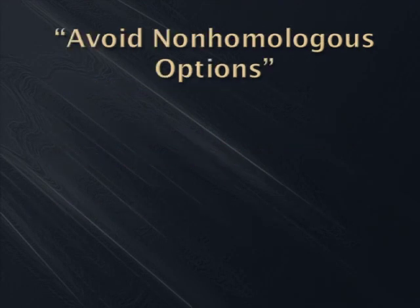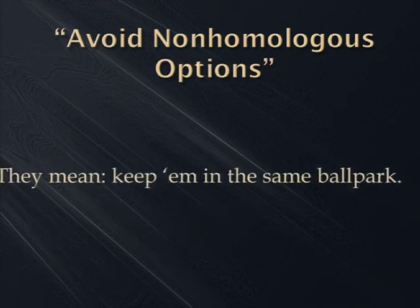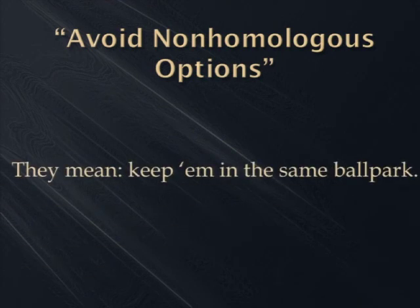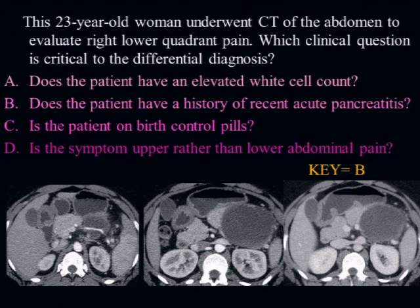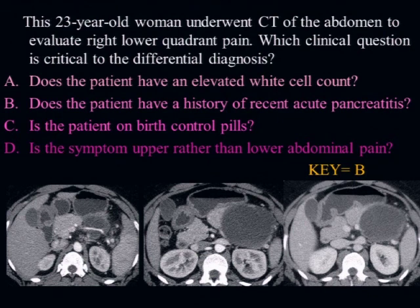You've got to keep choices focused. The board says avoid non-homologous options — just keep them in the same ballpark, the same sorts of things — because you want to test a single concept. Here's an example from the pancreatitis cases: A: does the patient have an elevated white count? (lab finding). B: does the patient have a history of recent pancreatitis? (medical history). C: is the patient on birth control pills? (medication history). D: is the symptom upper rather than lower abdominal pain? Four completely different things — she may as well have said 'do you know anything about pancreatitis?'